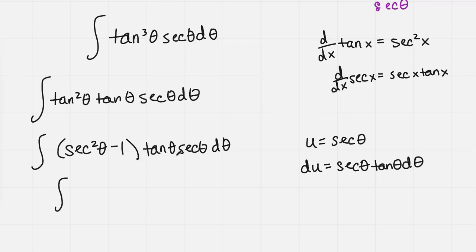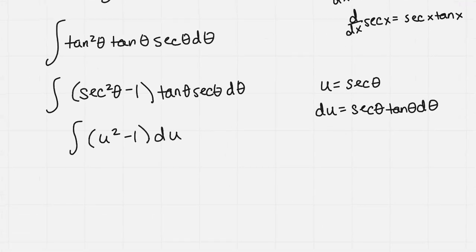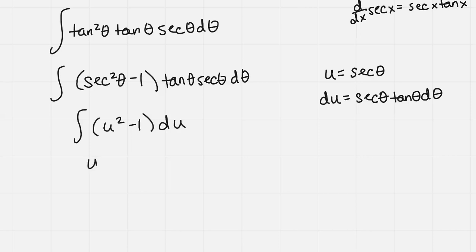I can make all those substitutions now. I have the integral of u squared minus 1, that quantity, times du. Then I can solve for this. I get u cubed over 3 minus u, and of course this plus c. Now I have to go back and make my substitution. I get secant cubed theta over 3 minus secant theta, all this plus c.